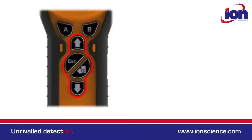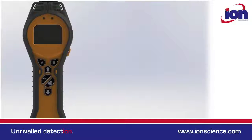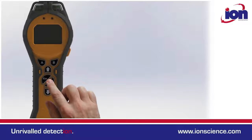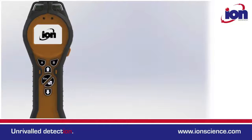The keypad has simple up, down, enter, and escape functionality. The up and down keys change menu options and adjust settings. The enter key selects menus and settings, and the escape key escapes to previous menus and aborts settings. To switch the Tiger on, simply press the enter key. After a brief self-test routine, the Tiger is ready for use.